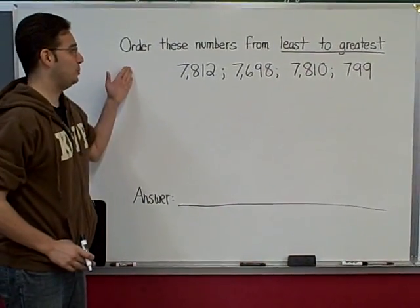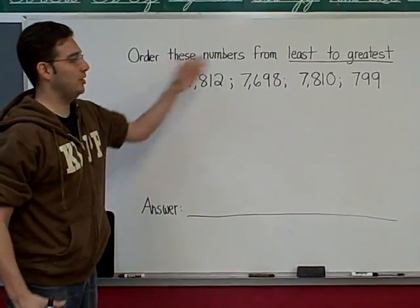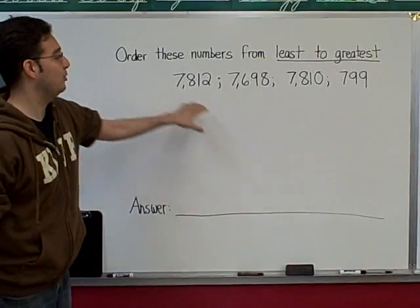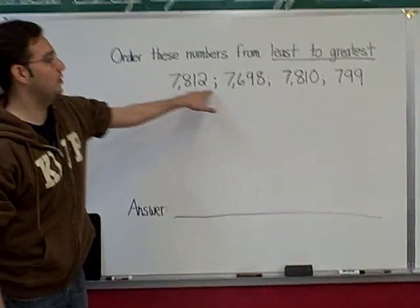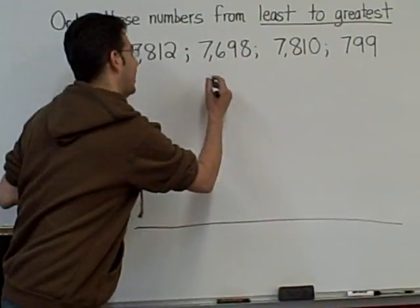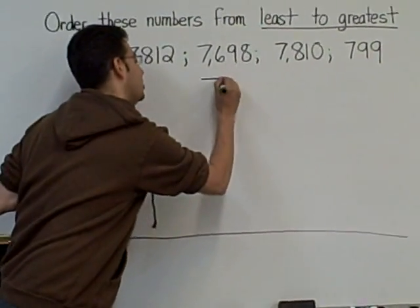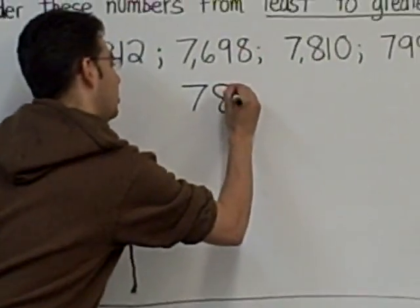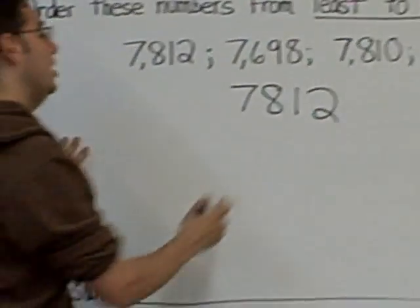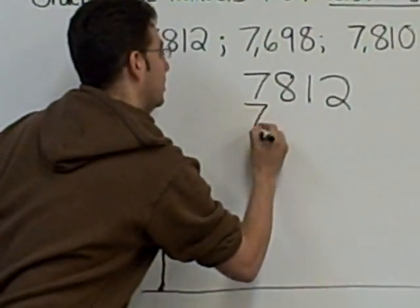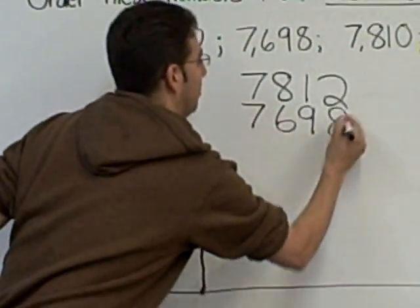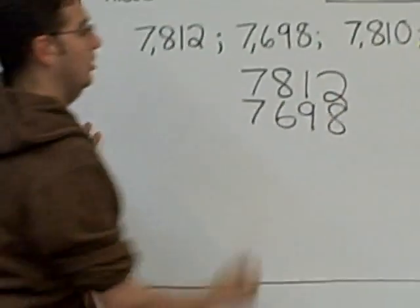In this problem we're going to order these numbers from least to greatest. The first thing we're going to do is take a look at the four numbers and stack them on top of each other to make sure that each number is in the correct place.